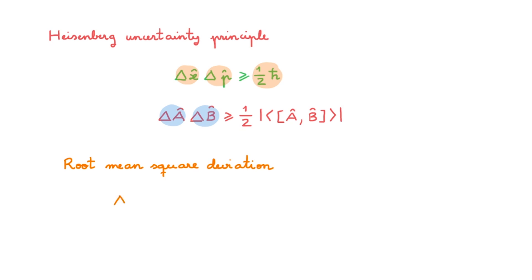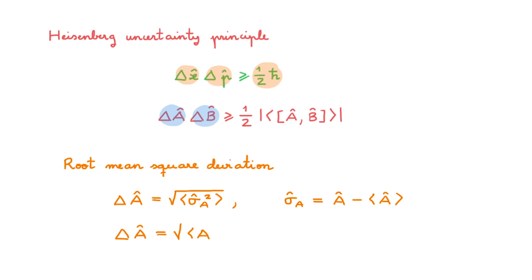Remember that the root mean square deviation delta A of an operator A for a system in state psi is equal to the square root of the expectation value of sigma A squared, where sigma A is equal to A minus the expectation value of A. We can also write delta A in a compact shorthand form. In today's video I'll assume you are familiar with these expressions. If you aren't, you should first check the video on expectation values, which you can find linked in the description.